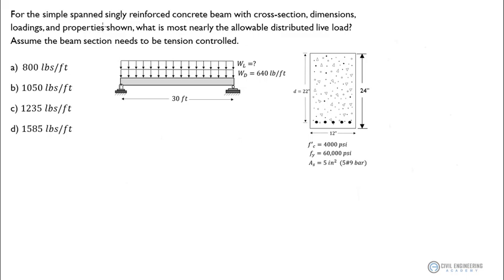The problem reads like this: for a simple span, singly reinforced concrete beam with cross-section dimensions, loadings, and properties shown, what is most nearly the allowable distributed live load? We are to assume the beam section needs to be tension controlled, which is a pretty common assumption for reinforced concrete design. What that means is that we're trying to create a situation where the steel or rebar yields in tension before the concrete crushes in compression.